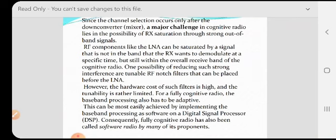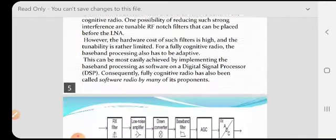The baseband processing also has to be adaptive. Adaptive means change according to environment. This can be most easily achieved by implementing the baseband processing as software on a DSP. Consequently, fully cognitive radio has also been called software radio by many of its proponents.